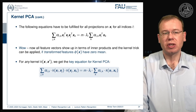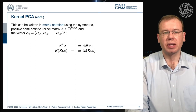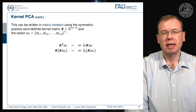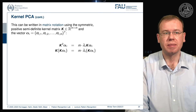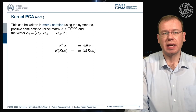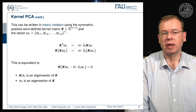In this key equation, essentially the kernel matrix pops up. Rearranging into matrix notation, we get rid of the sums and introduce our symmetric positive semi-definite kernel matrix K. K is only an M times M matrix, where M is the number of feature vectors. We are now limited by the number of observations and no longer by the dimensionality of the original feature vectors. We can pull out K on both sides, giving us an eigenvector problem where K alpha is an eigenvector of K, and alpha is also an eigenvector of K.